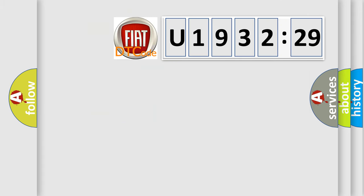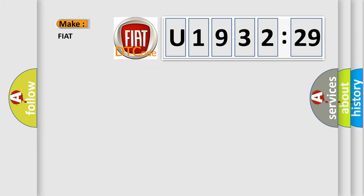The number itself does not make sense to us if we cannot assign information about what it actually expresses. So, what does the diagnostic trouble code U193229 interpret specifically for Fiat car manufacturers?